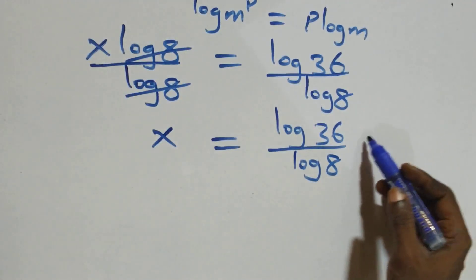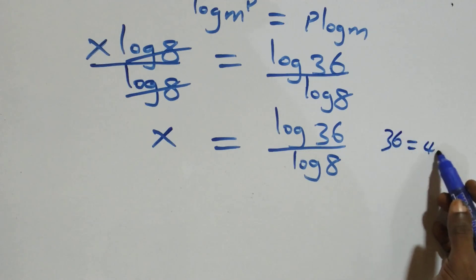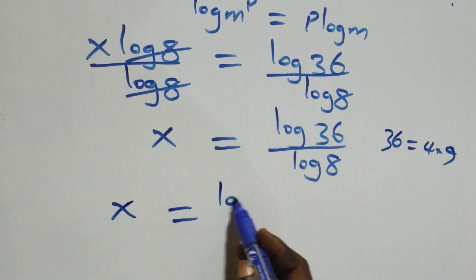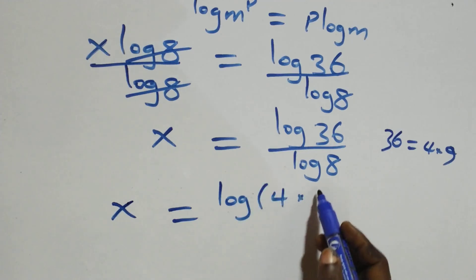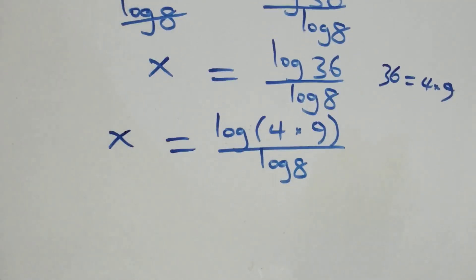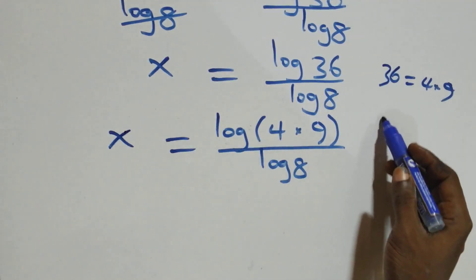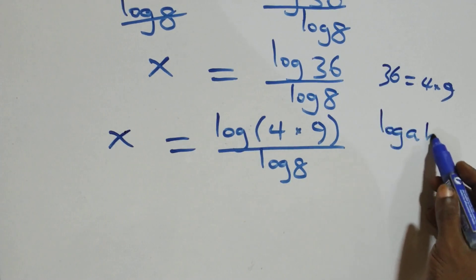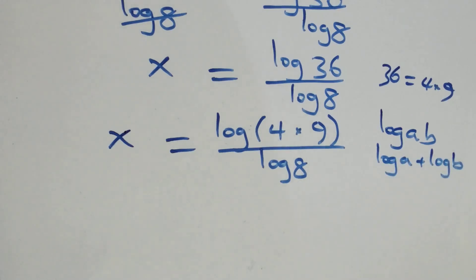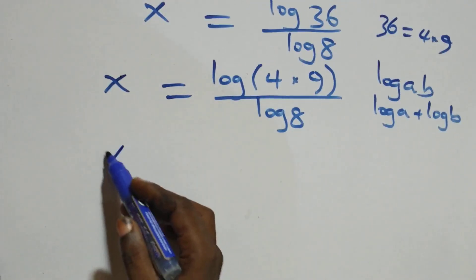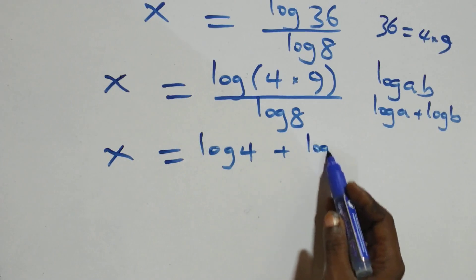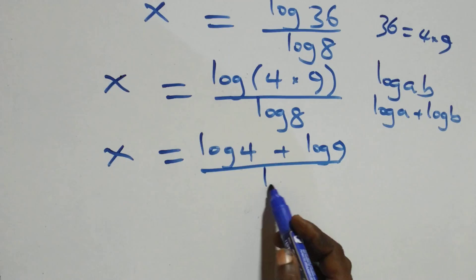Then next step, we can write 36 as 4 times 9. What we have becomes x equals to log of 4 times 9 over log 8. Now we apply the product rule: log a times b is the same thing as log a plus log b. So what we have becomes x equals to log 4 plus log 9 over log 8.